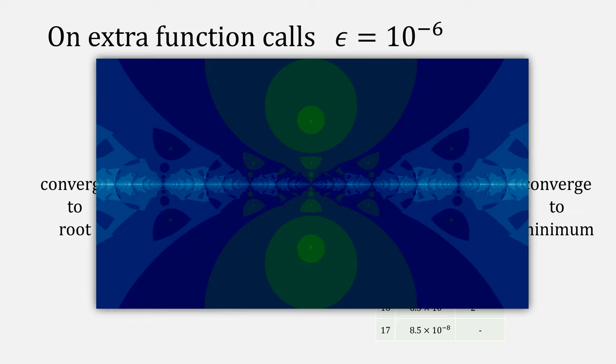But hold on, in our fractal example, didn't it converge quickly? Well, that's because our final ending epsilon was 10 to the minus 3, so it didn't really show.